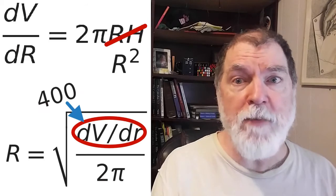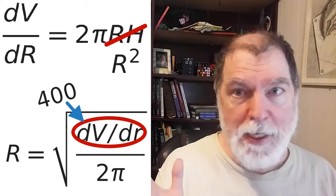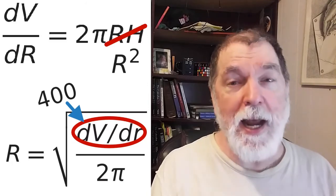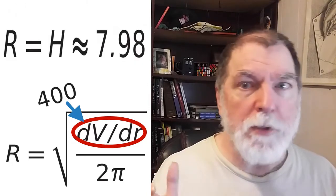The 400 for dV by dR. 2 pi is always a constant. And now we're going to take the square root of that, and we end up with about 7.98.